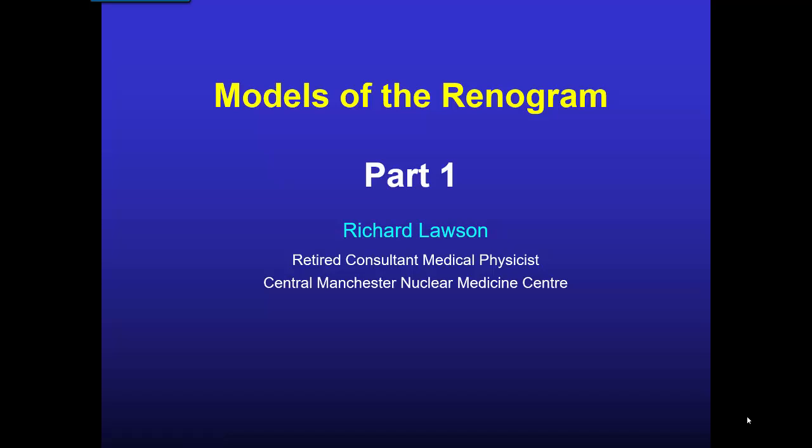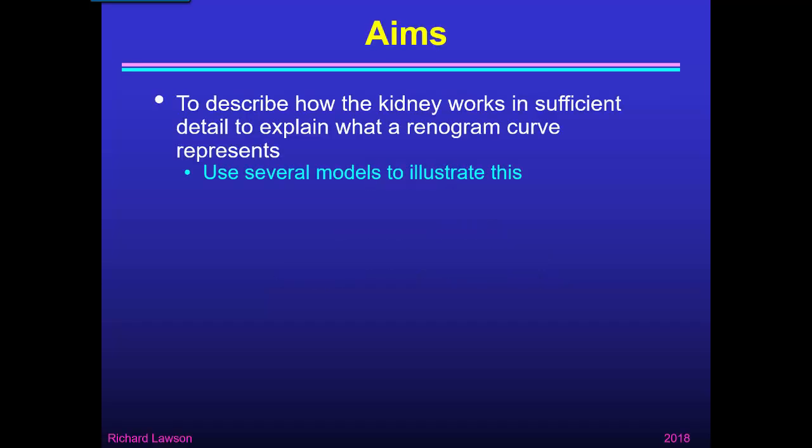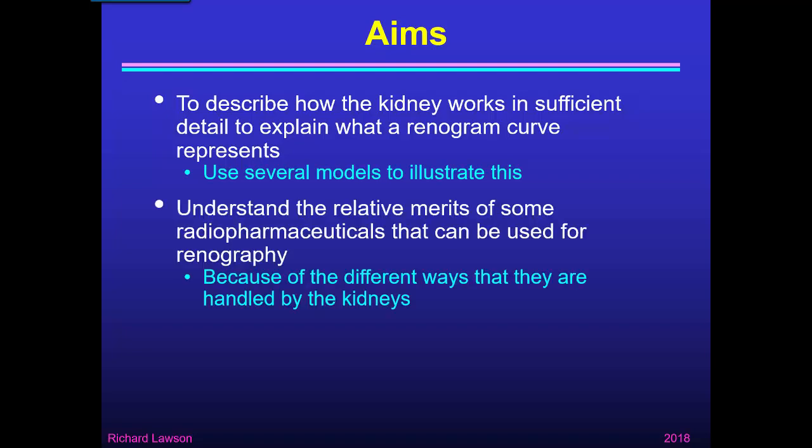This is part one of my talk on models of the renogram. The aims of this talk are first to describe how the kidney works in sufficient detail to explain what a renogram curve represents, using several models to illustrate this. The second aim is to understand the relative merits of some of the radiopharmaceuticals that can be used for renography, because of the different ways they are handled by the kidneys.